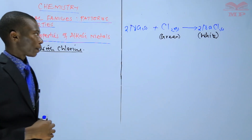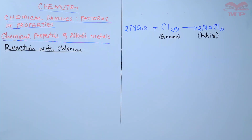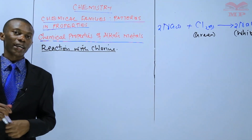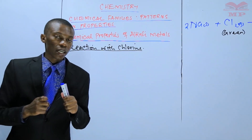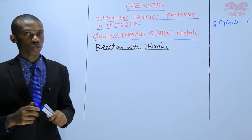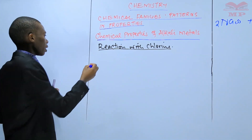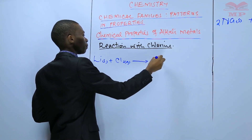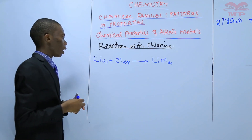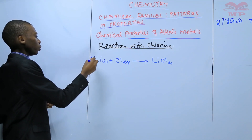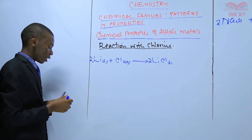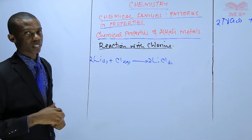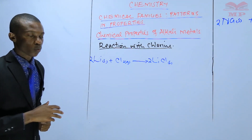In this lesson, I want us to discuss the reaction between chlorine gas and lithium, and also potassium. If you have a small piece of lithium metal and you burn it in chlorine, the lithium reacts with chlorine, leading to the formation of lithium chloride. The equation is: lithium (solid) reacts with chlorine gas, leading to the formation of lithium chloride. The equation should be balanced and include physical states. This reaction should also take place in a fume chamber because chlorine gas is still very poisonous.